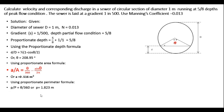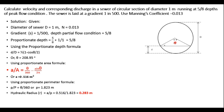Substituting the full flow perimeter P = π × D and solving, the wetted perimeter of the partially flowing sewer comes out to be 1.823 meters. The hydraulic radius is then found using r = a/p, substituting the wetted area and wetted perimeter of the partial flow case, giving a hydraulic radius of 0.283 meters.